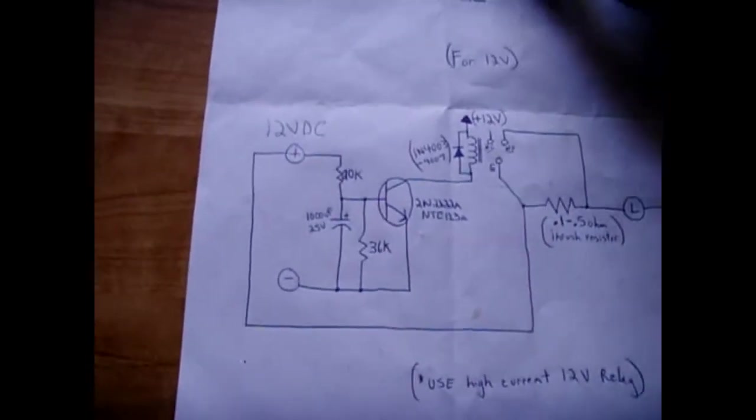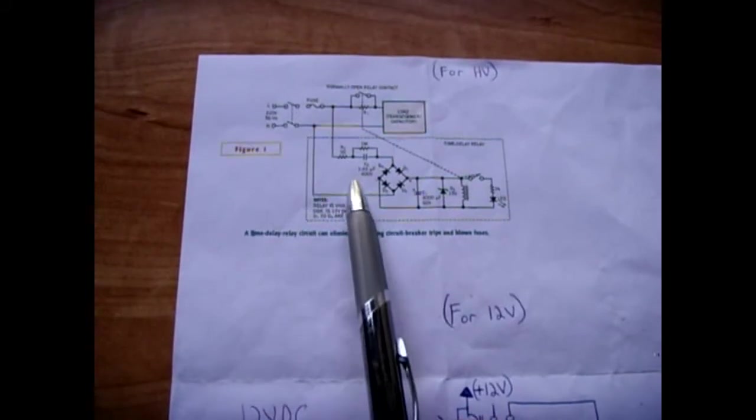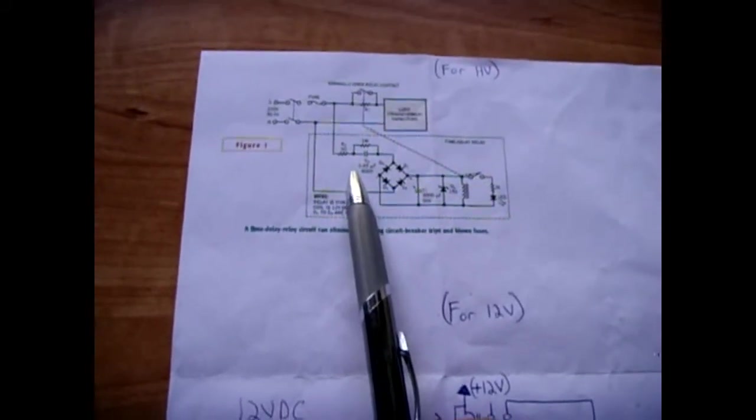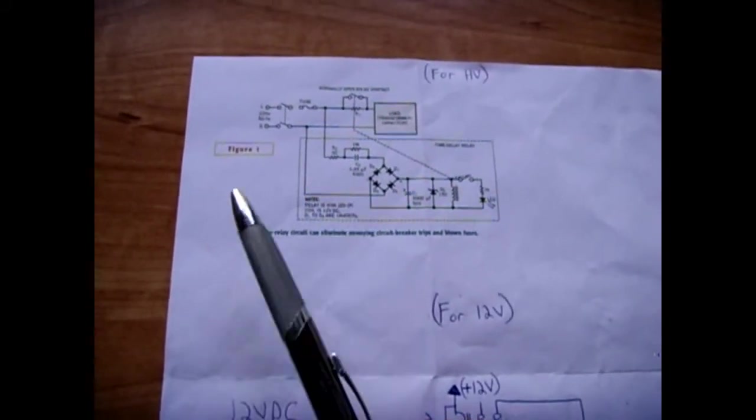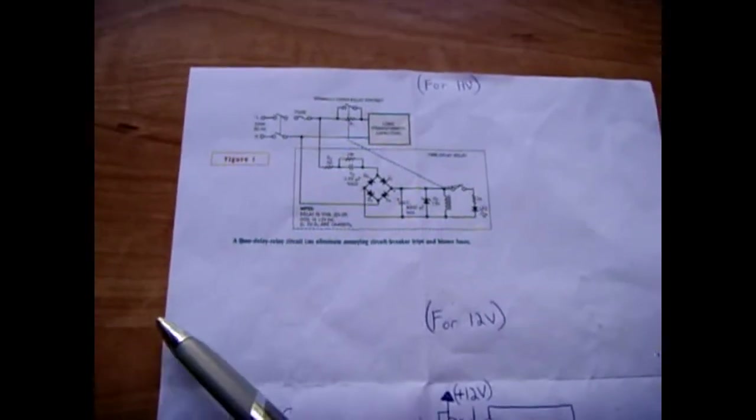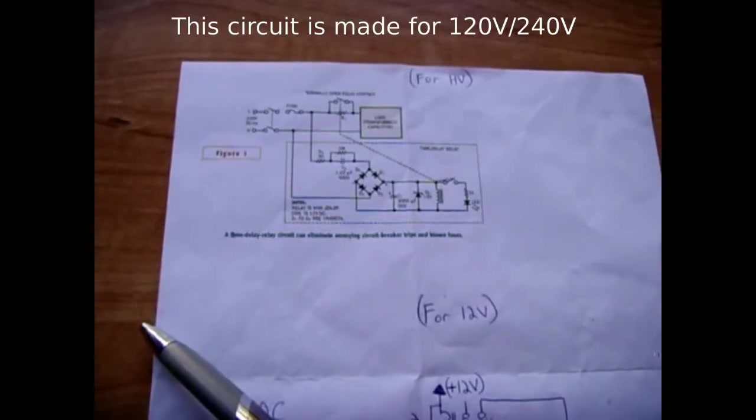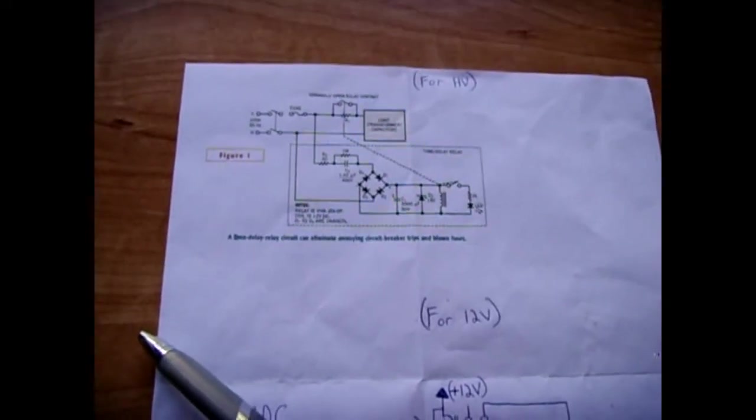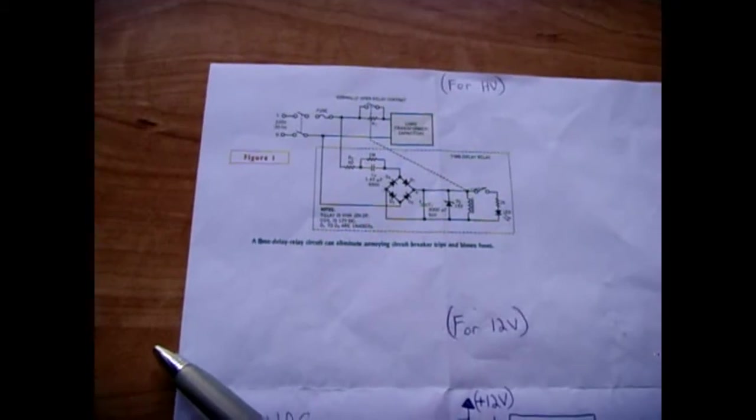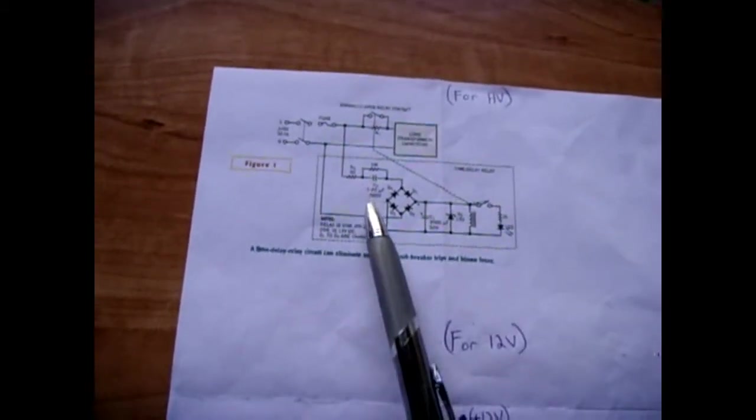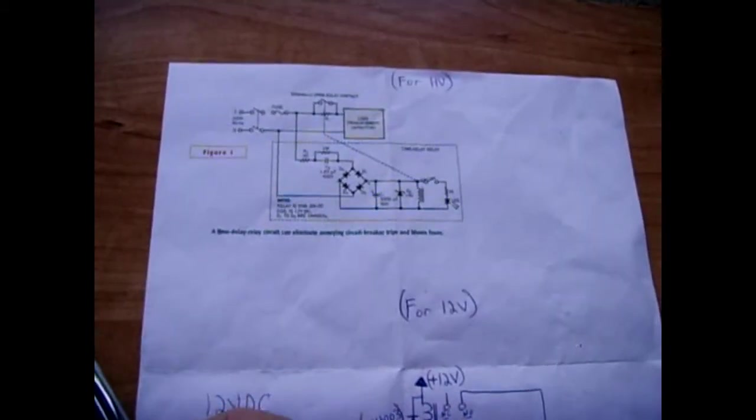Now this circuit here I found online, and it's designed for limiting inrush current. If you also have a problem with equipment, certain high voltage equipment, causing your breaker to trip from the inrush currents when it turns on, sometimes it might not trip the breaker, sometimes it does trip the breaker. This is a circuit you're going to want to use. The circuit is very similar.